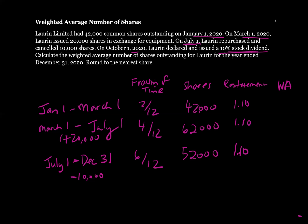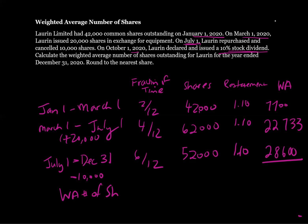Doing the math: 2/12 times 42,000 times 1.10 gives us 7,700. Then 4/12 times 62,000 times 1.10 gives us 22,733. And 6/12 times 52,000 times 1.10 gives us 28,600. The total weighted average number of shares is the sum of all those, which is 59,033.